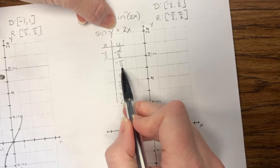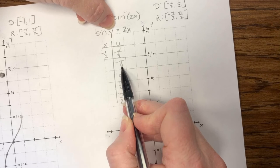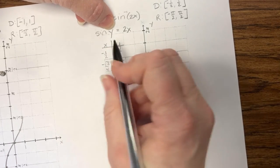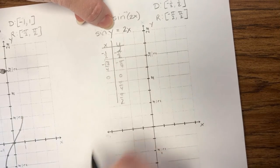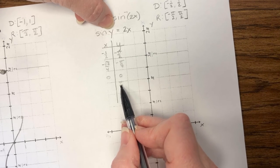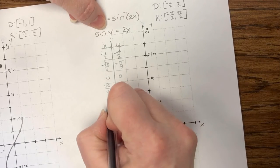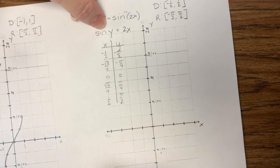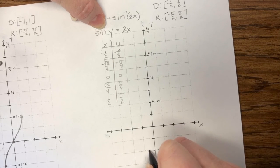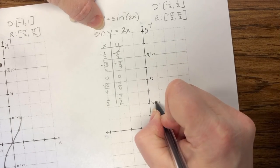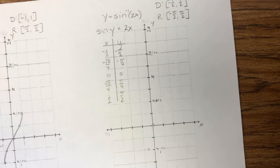Sine of zero is zero. Sine of pi fourths is square root of 2 over 2 — divide by two and I get square root of 2 over 4. Sine of pi halves is one — divide by two and I get one half. So this graph has a horizontal shrink: instead of going from negative one to one, it goes from negative one half to positive one half. Square root of two over four I don't know off the top of my head — I'm guessing it's about 0.35. Yes, 0.35.